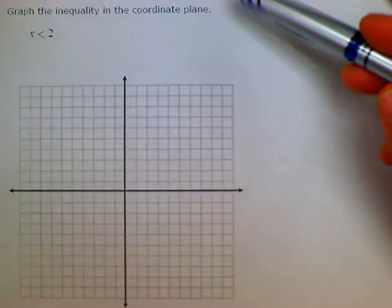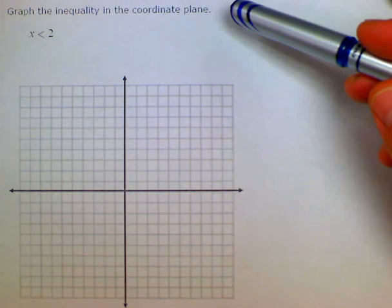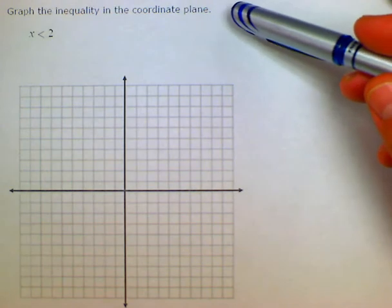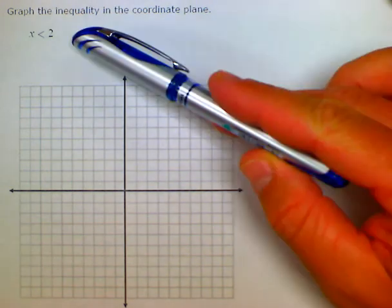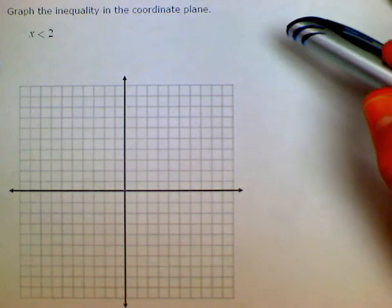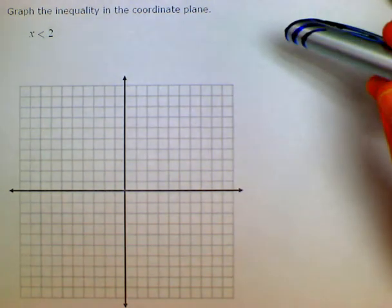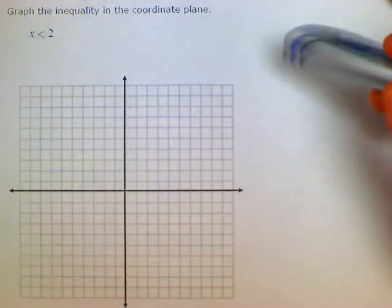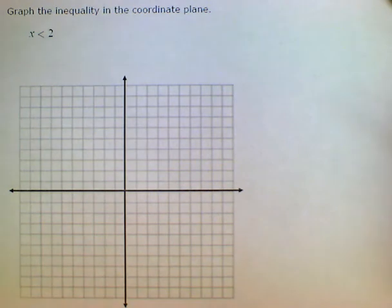We have the instructions graph the inequality in the coordinate plane, and we're given the inequality x is less than 2. What we want to recall is when we're working with linear equations or inequalities and we only have an x variable, that we're dealing with vertical lines.